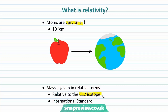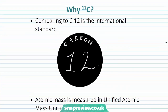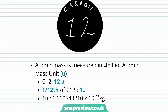Let's take a closer look at why the carbon-12 isotope is used. Comparing to carbon-12 is an international standard. Atomic mass is measured in a unit called the Unified Atomic Mass Unit, or U. Carbon-12 is given a mass of 12U, which means that 1/12 of carbon-12 has a mass of 1U, where 1U weighs approximately 1.660540210 × 10⁻²⁷ kilograms — so we're working with very, very small quantities of mass.